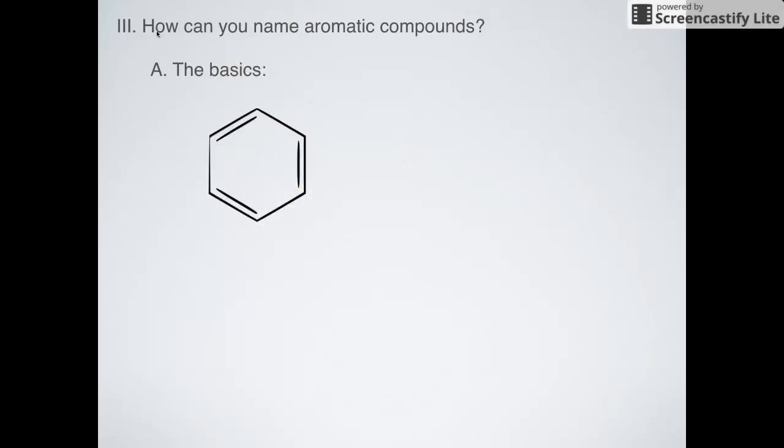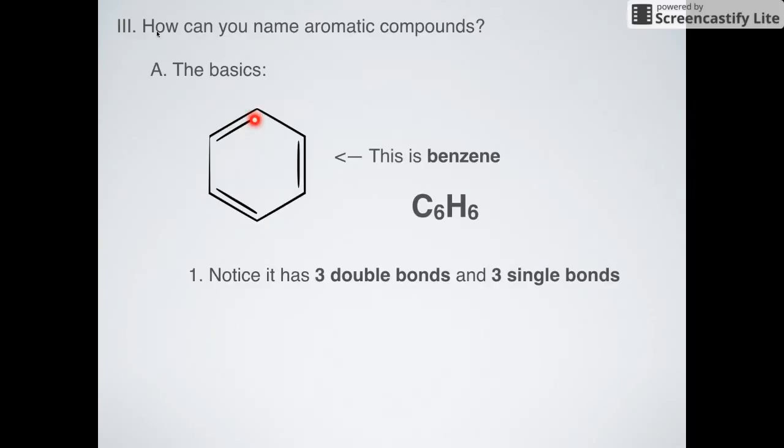So what is the simplest structure you're ever going to see? It's this guy. That is benzene, good old benzene, and that is its very simple chemical formula. Now notice that this has three double bonds and three single bonds. Those are our double bonds right here, and then the single bonds surround it on the opposite side.